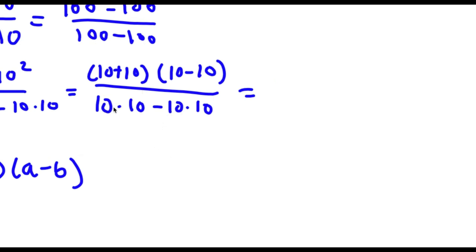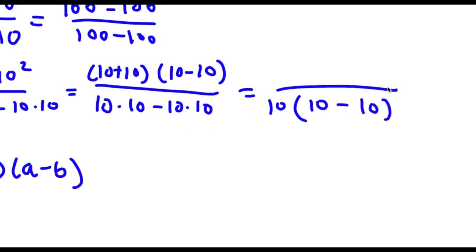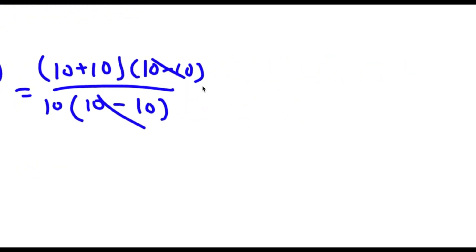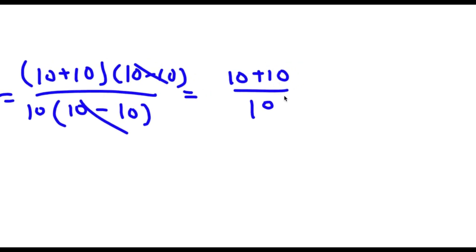Now I can factor out 10 from 10 times 10 minus 10 times 10. I get 10 times (10 minus 10), so my expression is (10 + 10) times (10 - 10) over 10 times (10 - 10). As you can see, I have (10 - 10) in my numerator and denominator, so these two can simply cancel out. So now I'm left with (10 + 10) over 10.